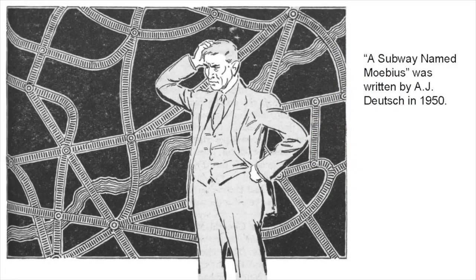In A Subway Named Mobius, 1950, Boston's underground train network becomes so convoluted that part of it flips into another dimension, along with a train full of passengers, although all arrive safely at their intended stations in the end. Written by A.J. Deutsch, an astronomer at Harvard, one of the stops on the system, it plays on the themes of the Mobius strip and Klein bottle, the latter being a one-sided shape that can exist only in four dimensions.